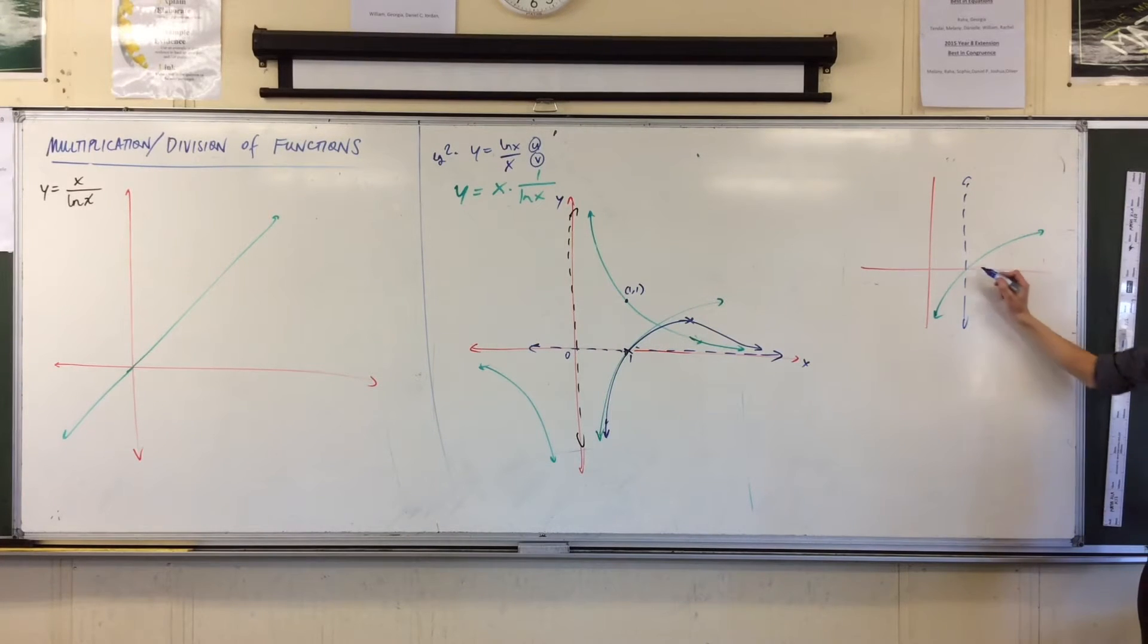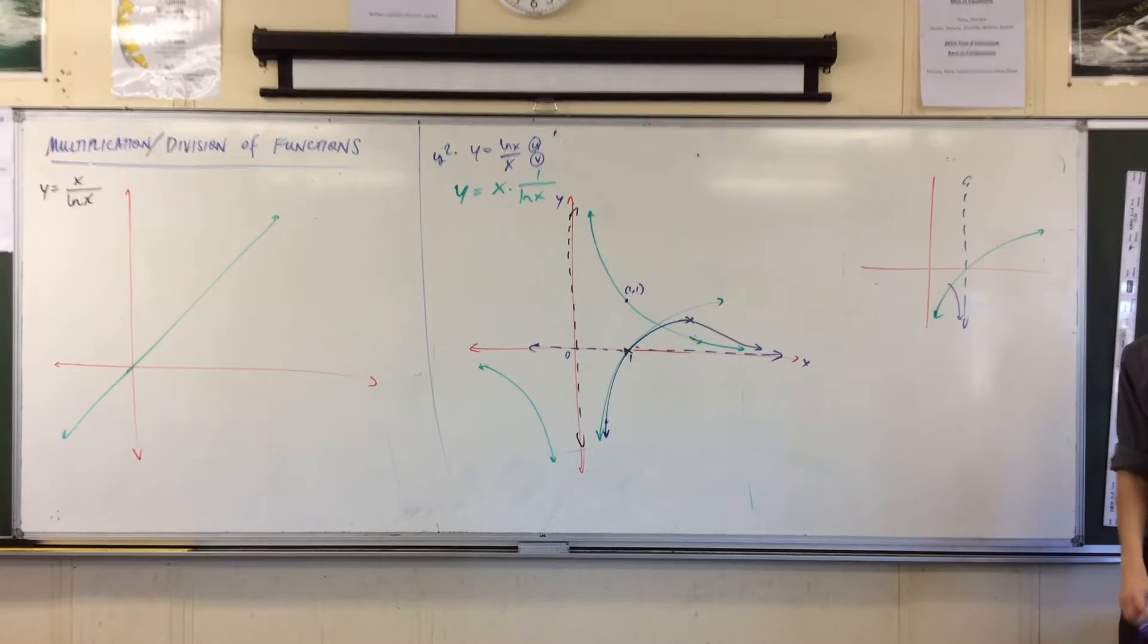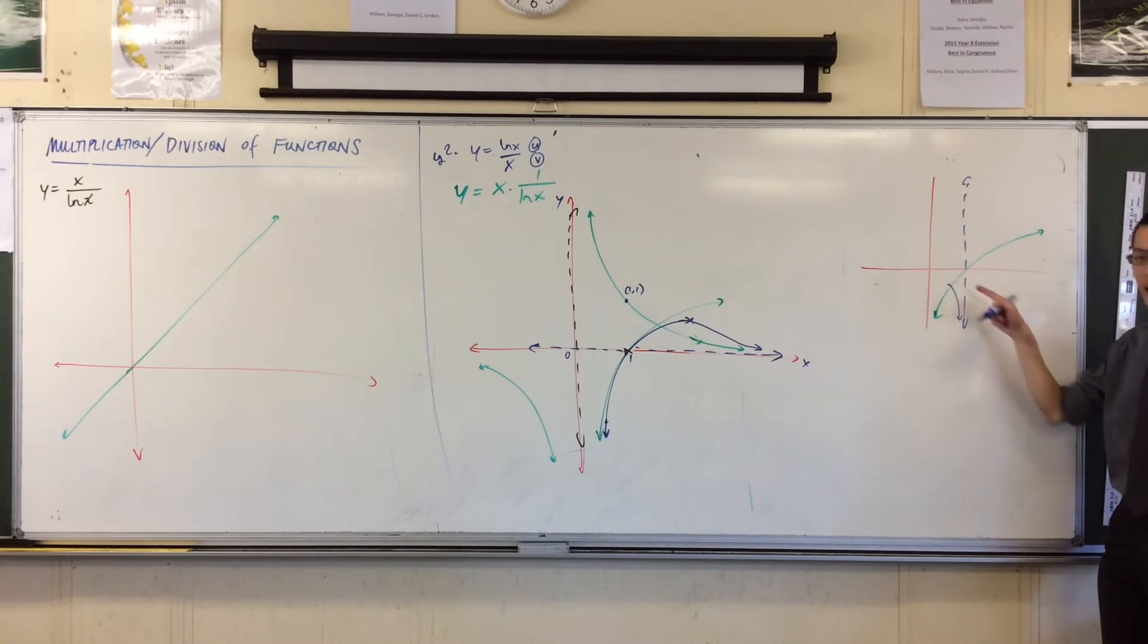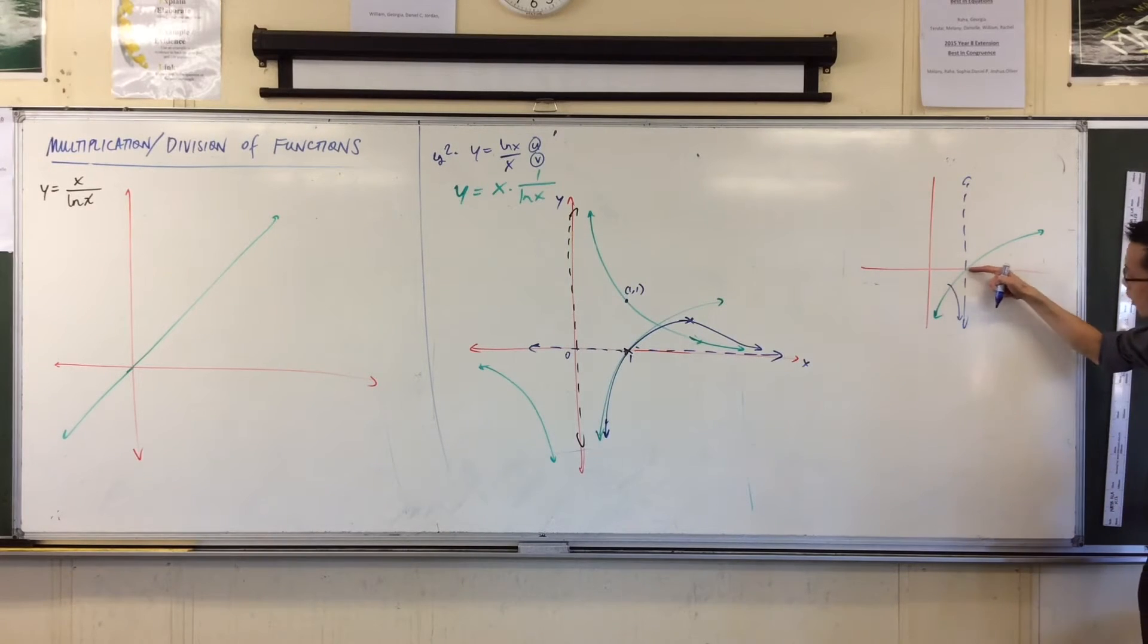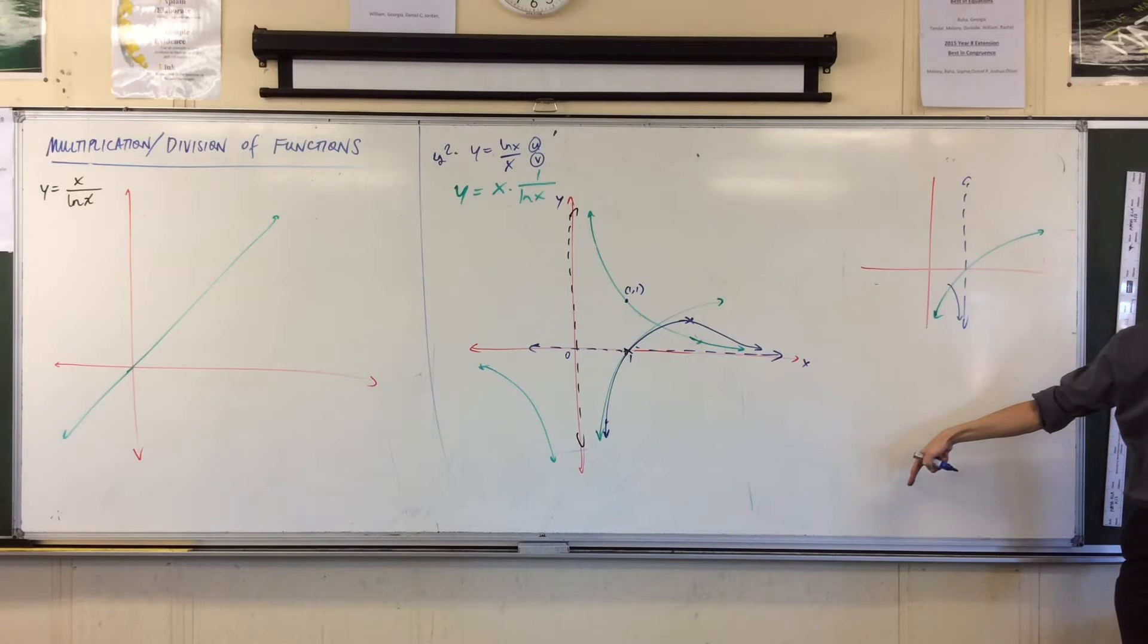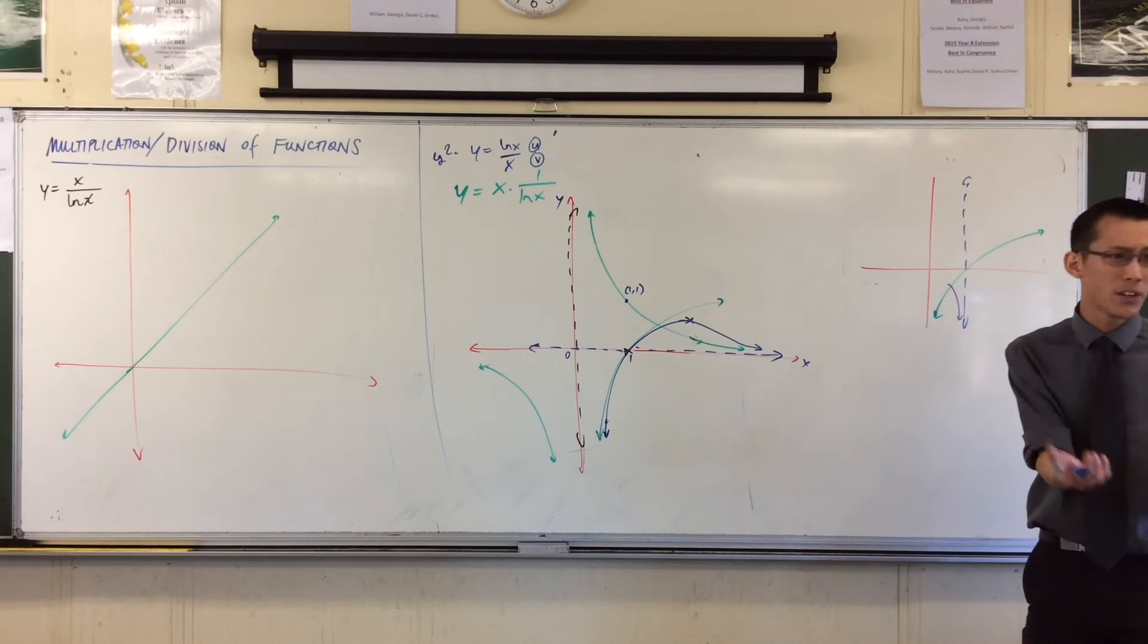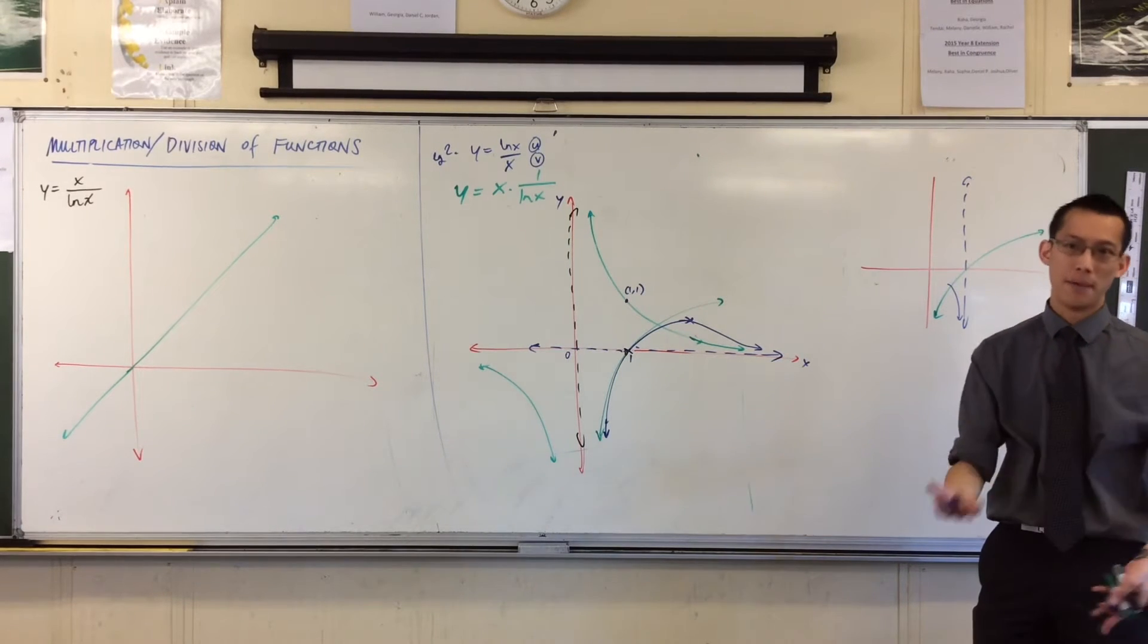Now, what's happening as I approach here, as I approach this asymptote? Well, I'm approaching zero from below, which means the reciprocal will approach negative infinity. But then what's happening as I go to the left? Well, log x is approaching negative infinity. So the reciprocal will approach 1 over negative infinity, which is a really, really tiny number, but negative.